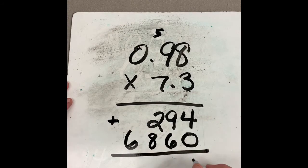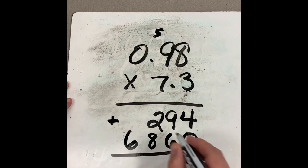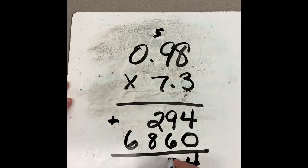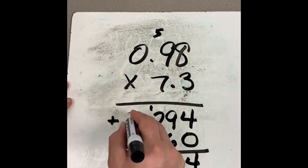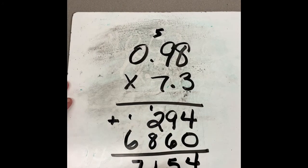Just like normal. Four plus nothing is, of course, four. Six plus nine is fifteen. Carry my one over. Two plus eight is ten, and that other one makes eleven, so I'm going to carry my one again, and six plus one is seven.